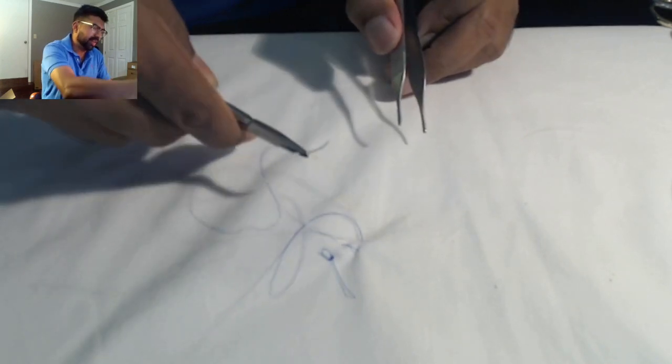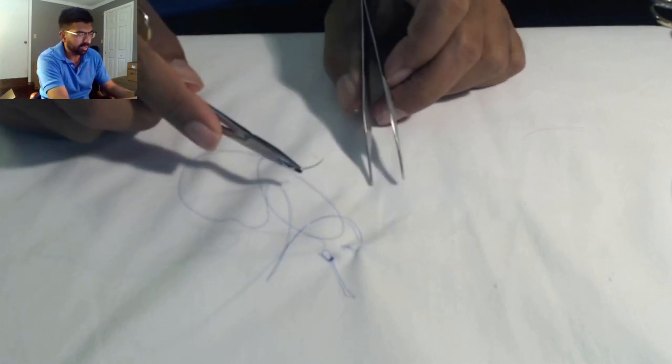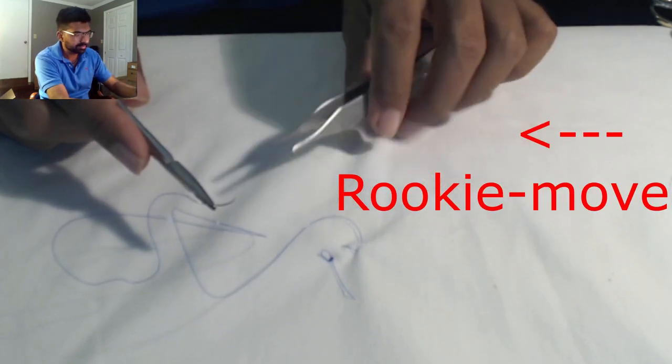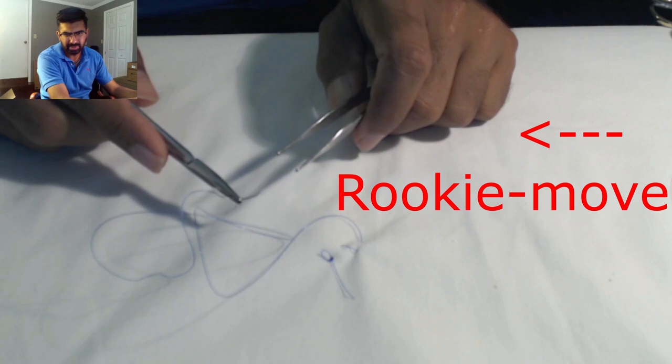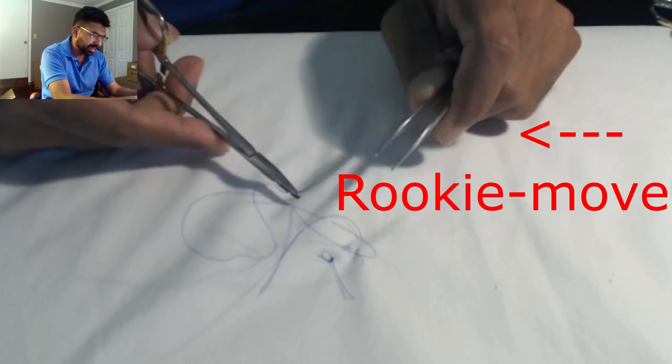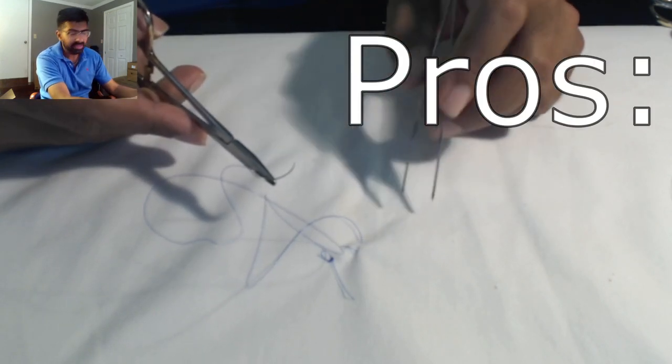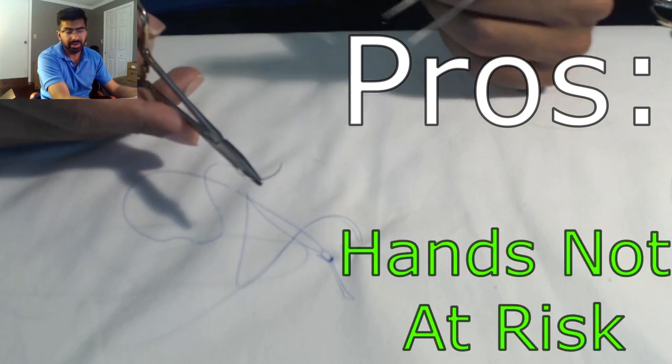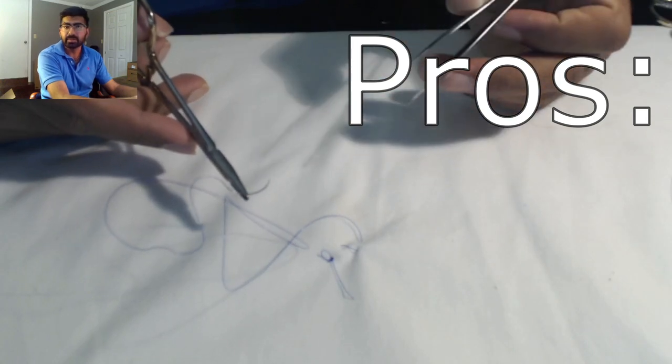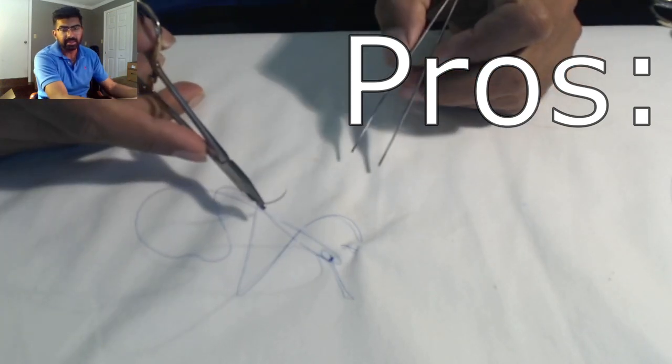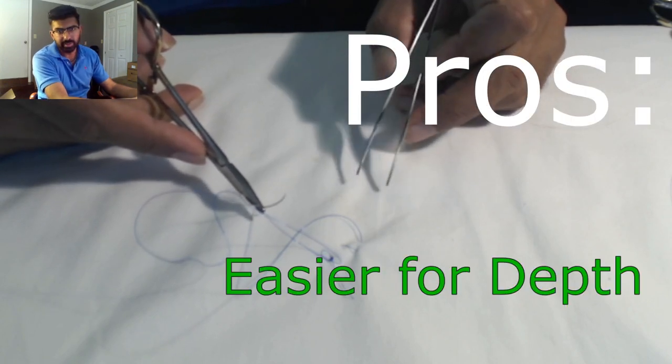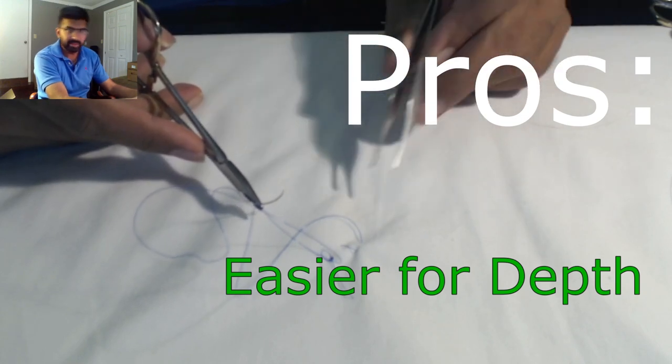This is something I see more often interns do. When they're setting the needle, they'll take their left hand and hold it on top so it doesn't move, then they'll set it and reload it. The benefit of this technique is number one, unlike hand reloading, you are not necessarily putting your hands at risk. Number two, in certain deep situations where you're down in the belly, you can't necessarily reload the needle with other techniques and you don't want to reach in there to grab it.